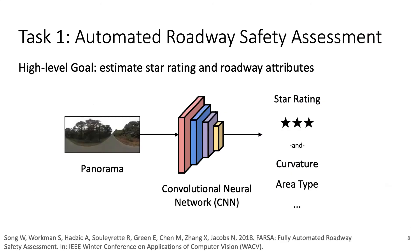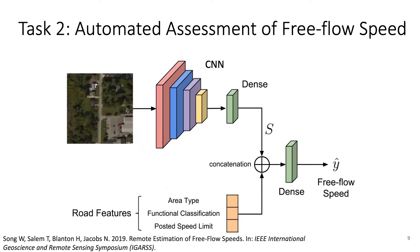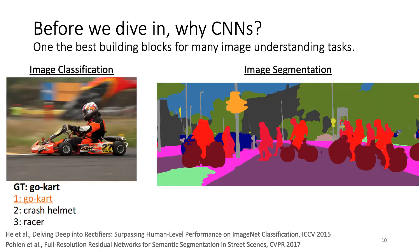We have two tasks we're addressing. For the roadway safety assessment task, we'll take a panorama collected by vehicles driving through an area, pass it through a convolutional neural network, and predict the star rating. Additionally, for the free flow speed task, we'll use satellite imagery to make predictions. Both use different neural network architectures tailored to the particular task. Convolutional neural networks are one of the best building blocks for image understanding tasks.